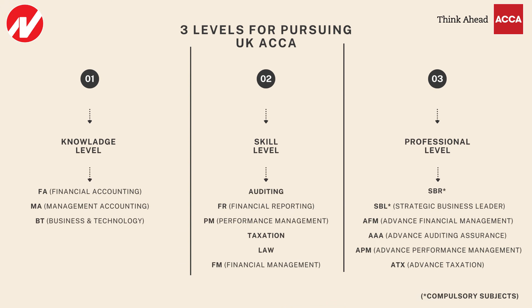At Professional Level there are six subjects in total, out of which two are compulsory. One is SBR — Strategic Business Reporting, which is essentially Accountancy — and second is SBL — Strategic Business Leader. These two subjects are compulsory; anyone opting for Professional Level will have to study them.